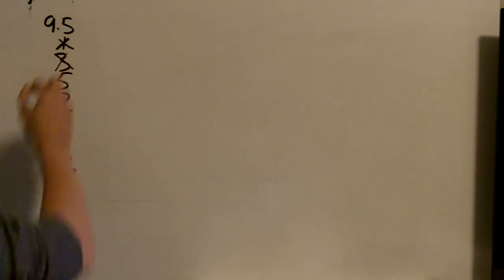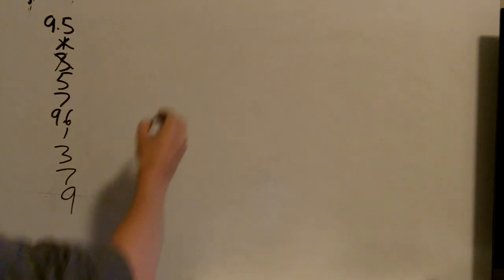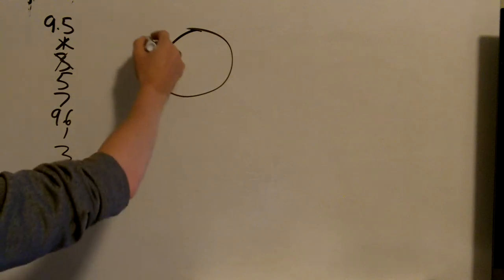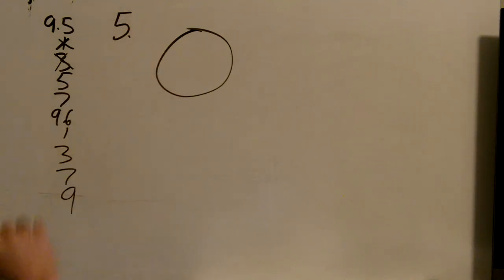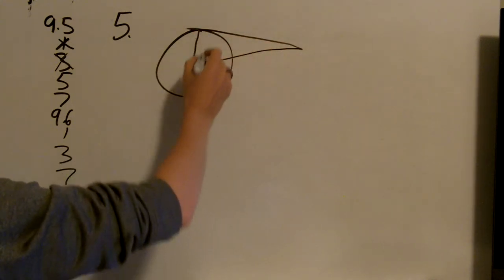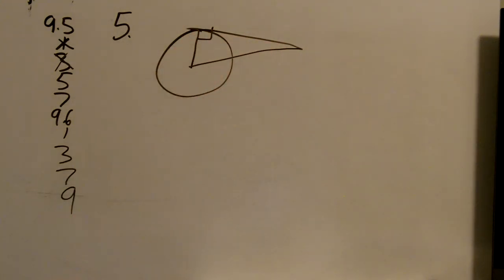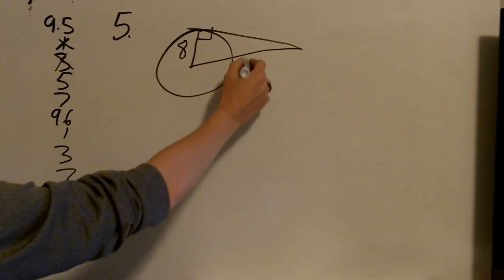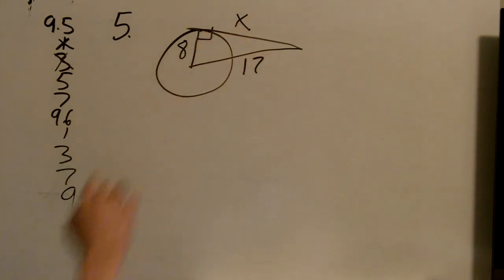For number 5, number 5 is using Pythagorean Theorem to solve the missing side. So it tells me this is a tangent. And that this is 8. And this is 17. And I want to know what that x equals.